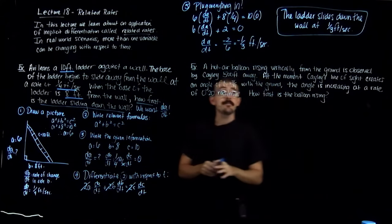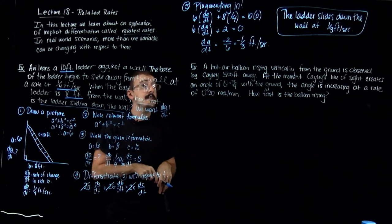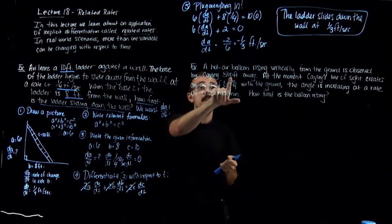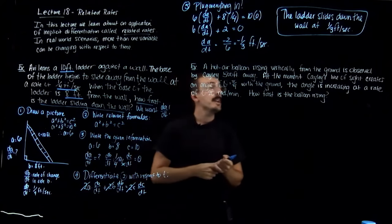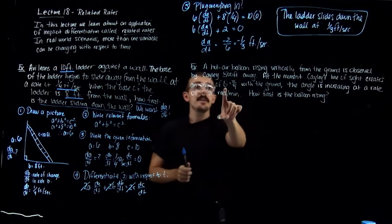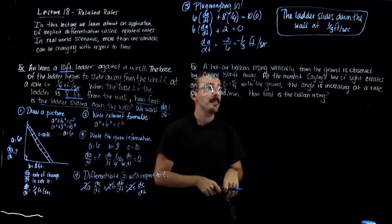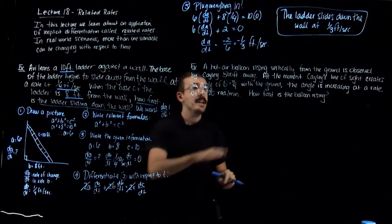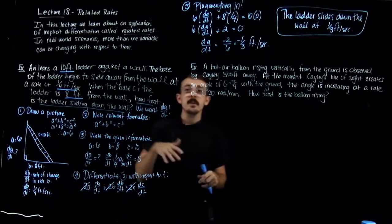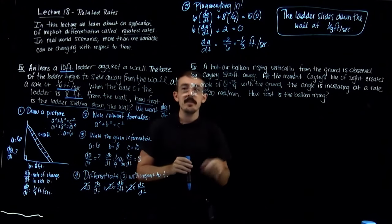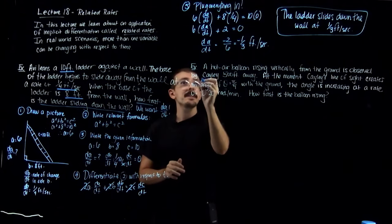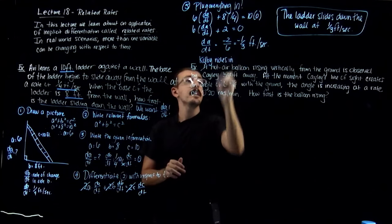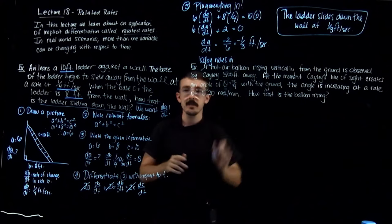Let's look at the next example. A hot air balloon rising vertically from the ground is observed by Cayley 500 feet away. At the moment Cayley's line of sight creates an angle of theta = π/4 with the ground, the angle is increasing at a rate of 0.20 radians per minute. How fast is the balloon rising?